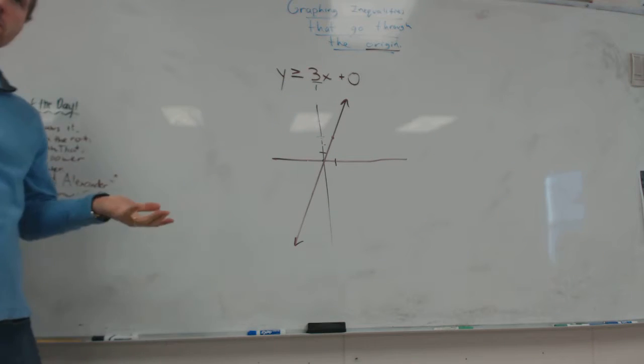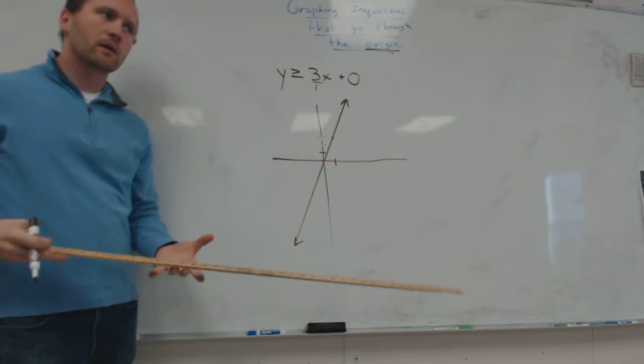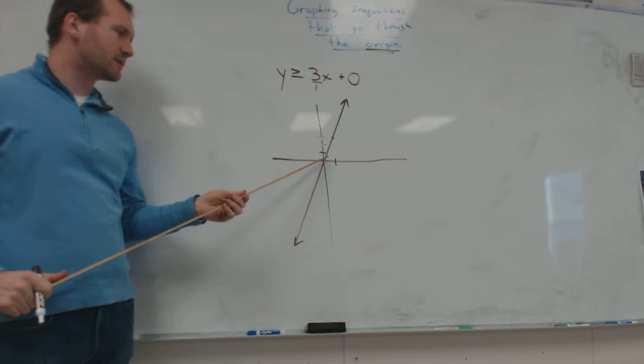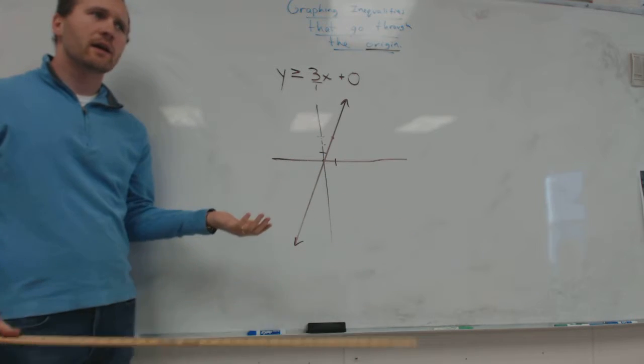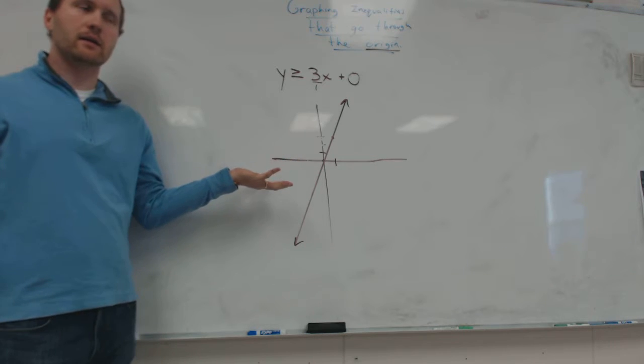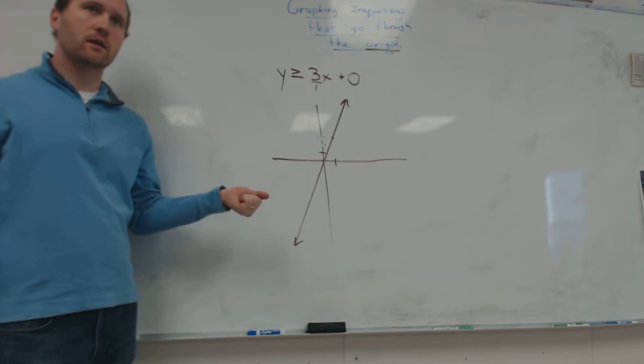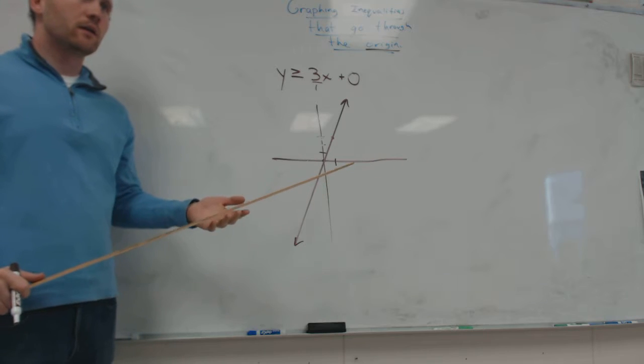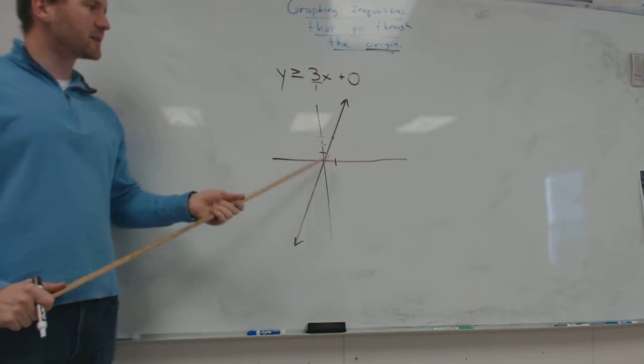Because I have greater than or equal to. Here's the tricky part. We always plug in 0, 0 to figure out which side to shade on. But I can't do that now. Why not?